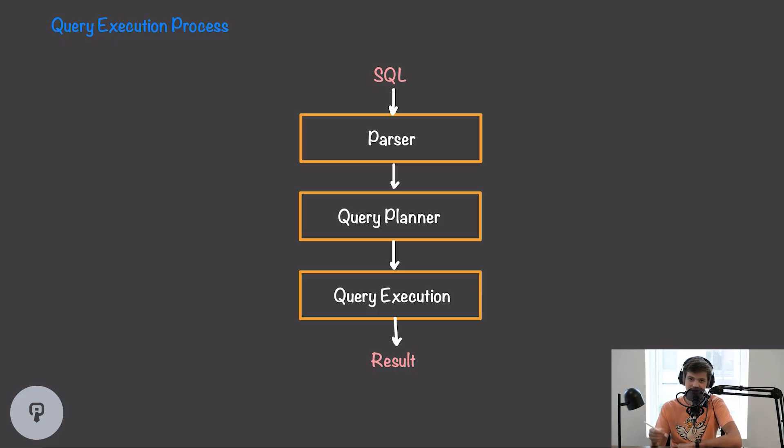Alright, so let's dive into the process that the database uses to figure out how to execute your query. The process generally consists of three main steps. We start with a SQL query, and then we have a parser that parses that query, ensures that it's grammatically correct according to SQL standards, and translates that into some sort of data structure that's easier for the database to use in subsequent steps.